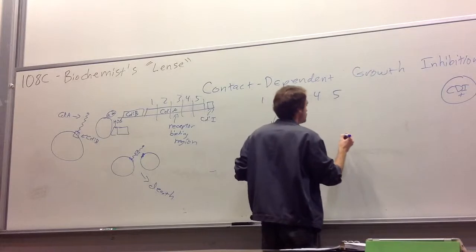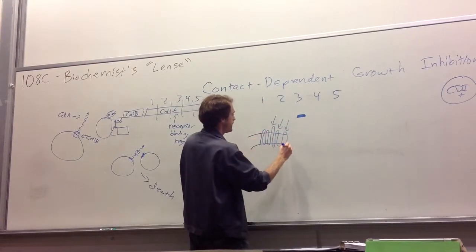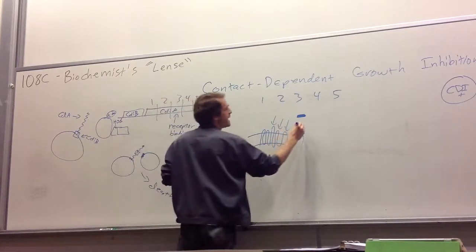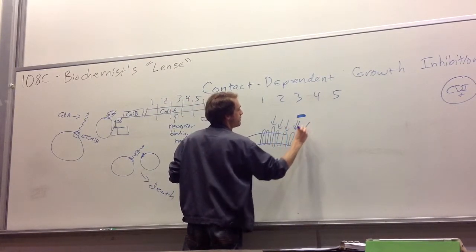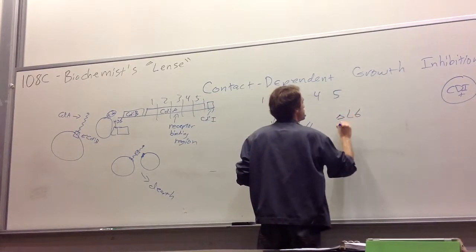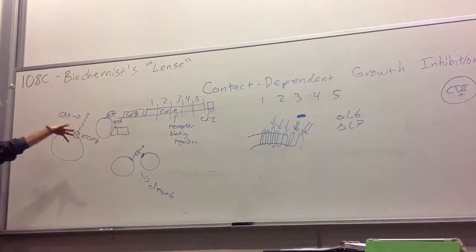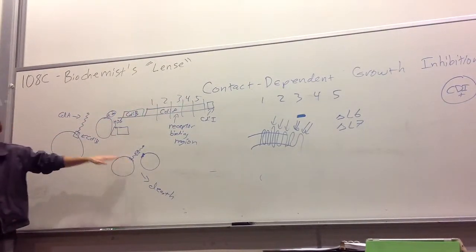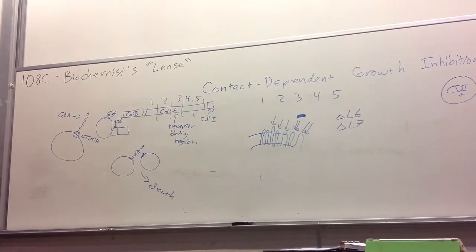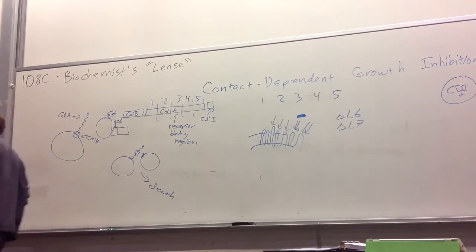And what we found was there were two loops. So there's a total of seven loops here. We found that this loop right here, and this loop right here, loops six and seven. So if we delete loop six or if we delete loop seven, the protein still gets assembled in the outer membrane, but we no longer get adhesion and the cells are completely resistant. This result actually explained another aspect of CDI.